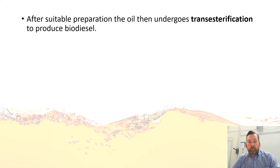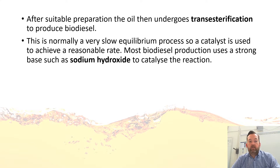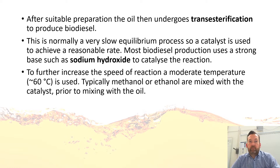After suitable preparation — that's the filtering and drying — the oil undergoes transesterification to produce biodiesel. It's normally a very slow equilibrium process, so we need a catalyst to get a reasonable rate. Most biodiesel production uses a strong base such as sodium hydroxide to catalyze the reaction. To further increase the speed, a moderate temperature of about 60°C is used, and typically methanol or ethanol are mixed with the catalyst prior to mixing with the oil.